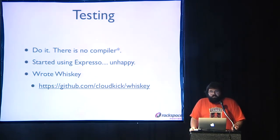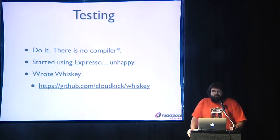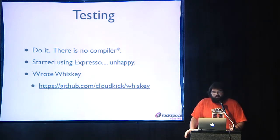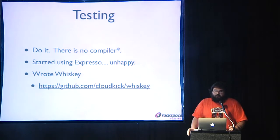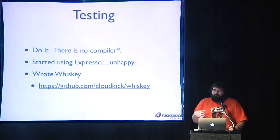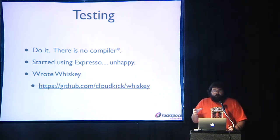So we wrote something called Whiskey, which is a test runner that does things differently. Every test file is run in a sub-process, so if you have global variable state or state changes inside your app, you can test that in Whiskey. You get a lot more isolation between processes, which was really important for us because a lot of our app involves downloading files, spawning sub-processes to do tar — things that are not very easy to do in Expresso.